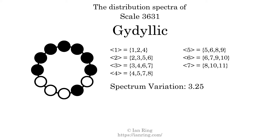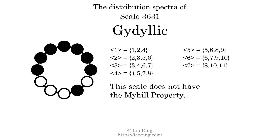Since the variation is greater than 0, this indicates that the scale is not perfectly even. The highest spectrum width is 4; since this is greater than 1, we know that this scale is not maximally even. If every spectrum has exactly 2 specific intervals, we call that the Myhill property. This scale does not have the Myhill property. Since the generic interval ranges overlap, this scale is an improper scale.